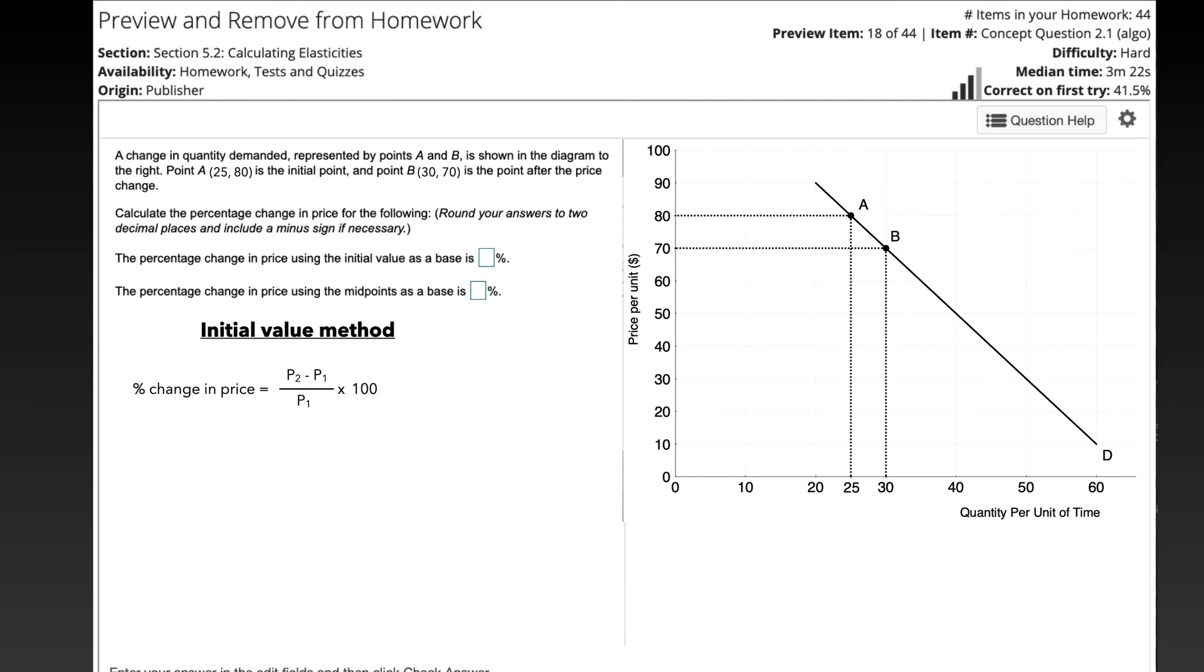So using the initial value method, we know that the percent change in the price is the new price, P2, subtracting the original price, P1, and dividing by the initial price.